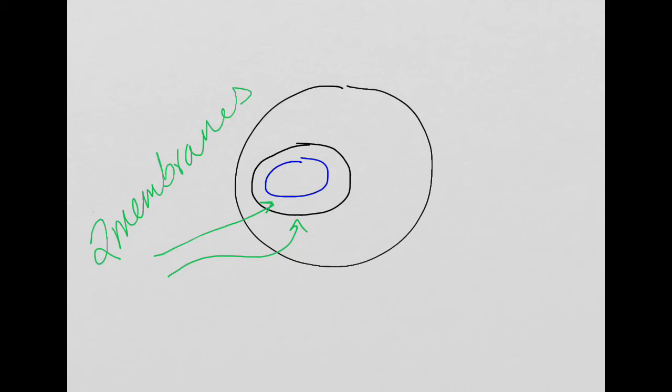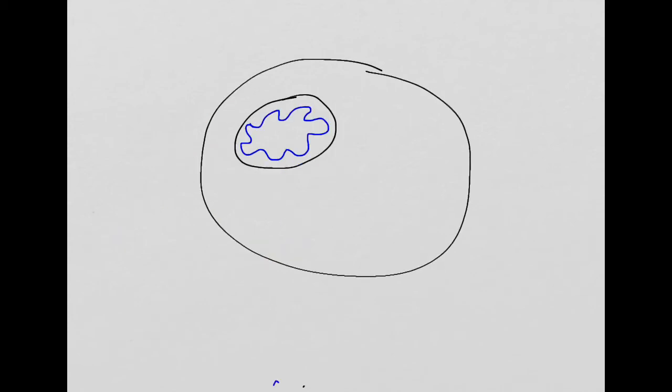But for whatever reason, which we don't really know, this cell, instead of being eaten, was allowed to stick around. Over time it became dependent upon the other cell to the point where it could no longer live on its own.